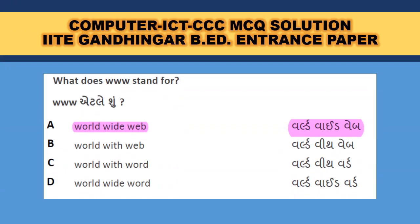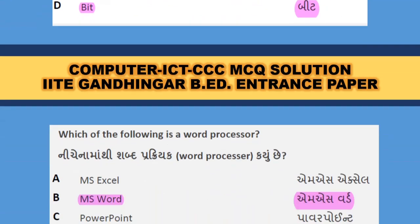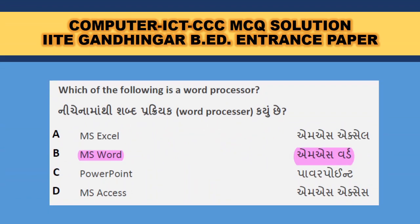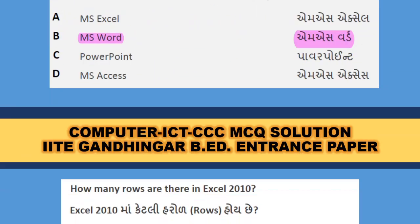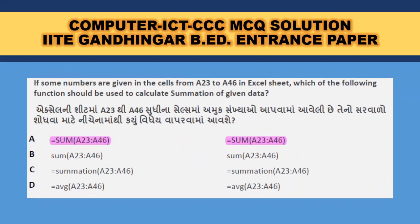WWW stands for World Wide Web — A is the correct answer. What is the smallest storage unit in the context of a computer? Bit, then comes byte. Which of the following is a word processor? That is MS Word. How many rows are there in Excel 2010? 16,384 rows. In Excel 2003 there were only 256 rows.